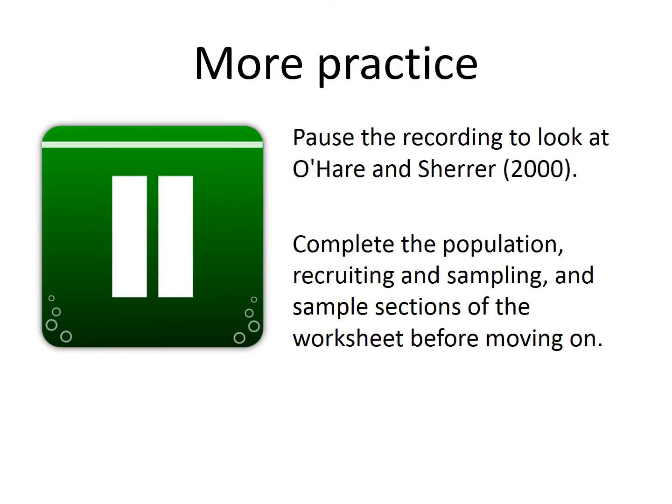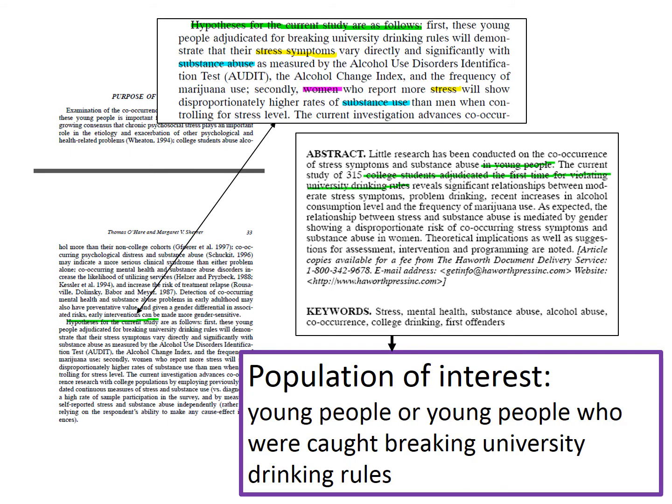Now, pause the recording to look at O'Hare and Share. Complete the population, recruiting, sampling, and sample sections of the worksheet before moving on. This one's more specific, but still a little tricky. The first hypothesis refers to young people who were caught breaking university drinking rules, but the abstract just refers to young people. Given that, we might note that they were definitely interested in young people or college students who were caught breaking university drinking rules.